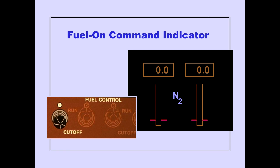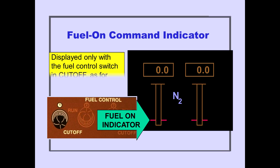The fuel on command indicator is displayed as part of the N2 indication when the fuel control switch is in cutoff. The fuel on command indicator shows the minimum N2 RPM at which the fuel control switch should be positioned to run during engine start.